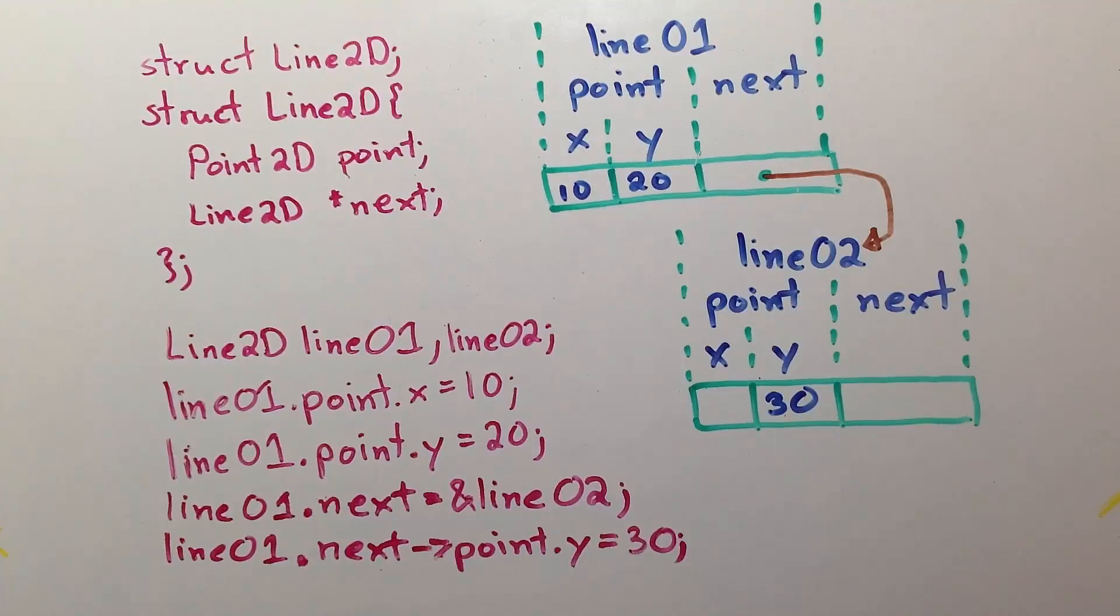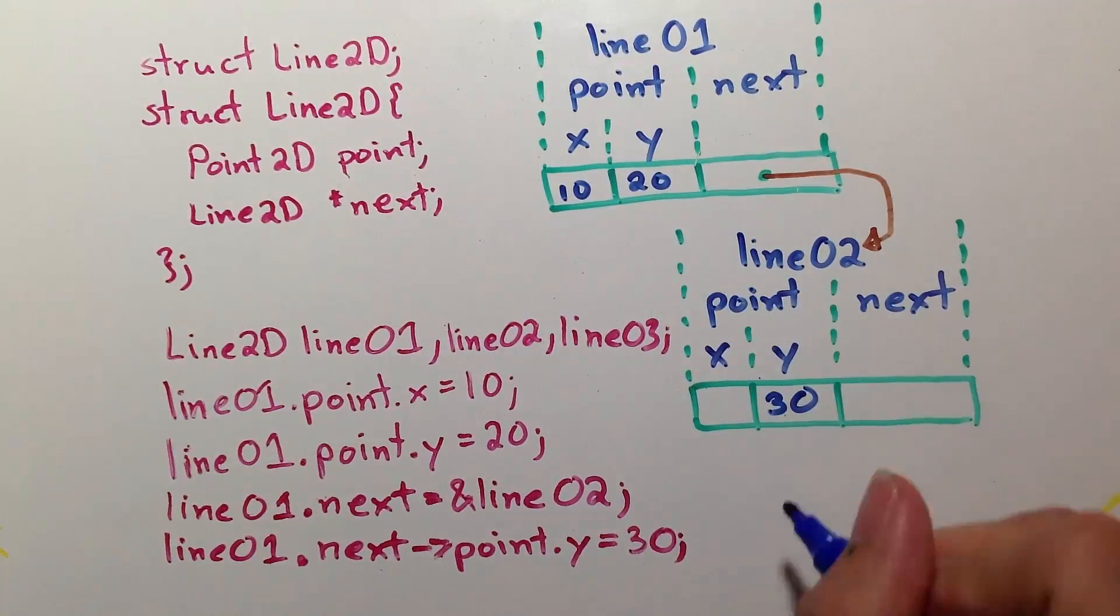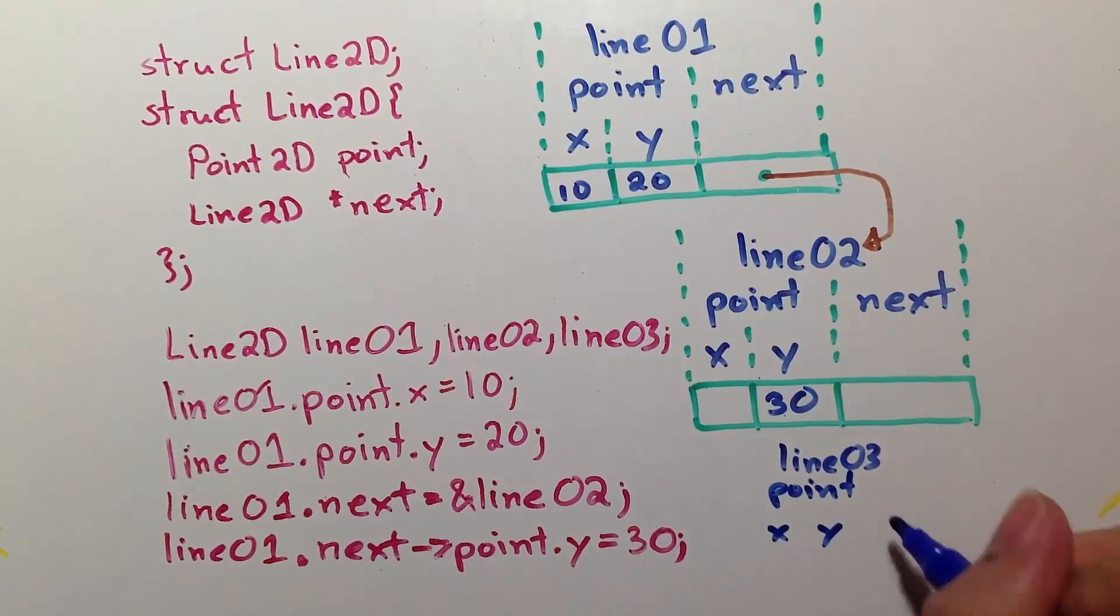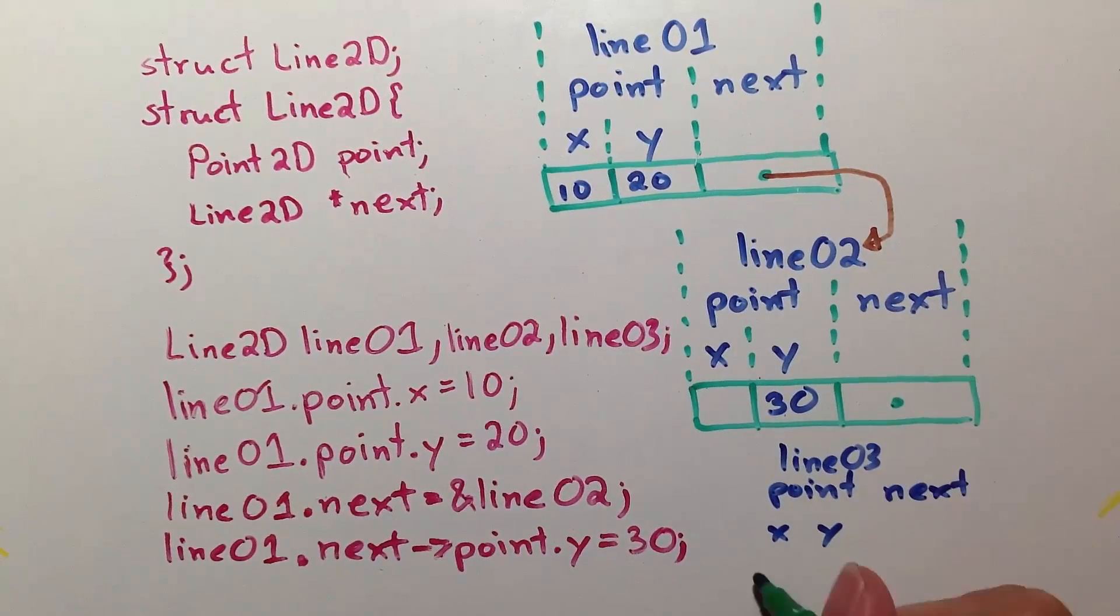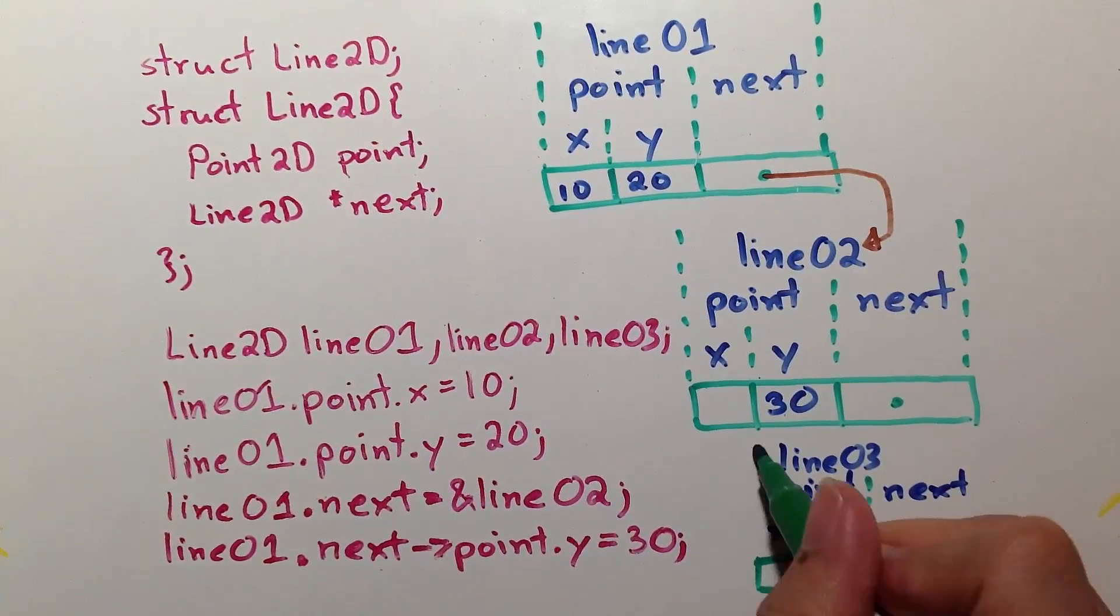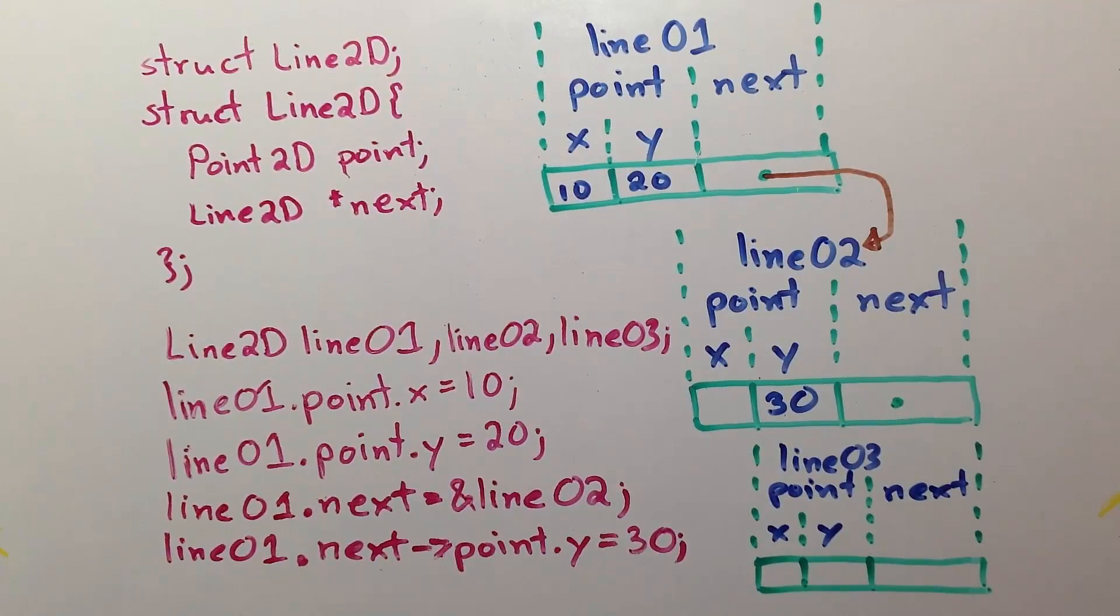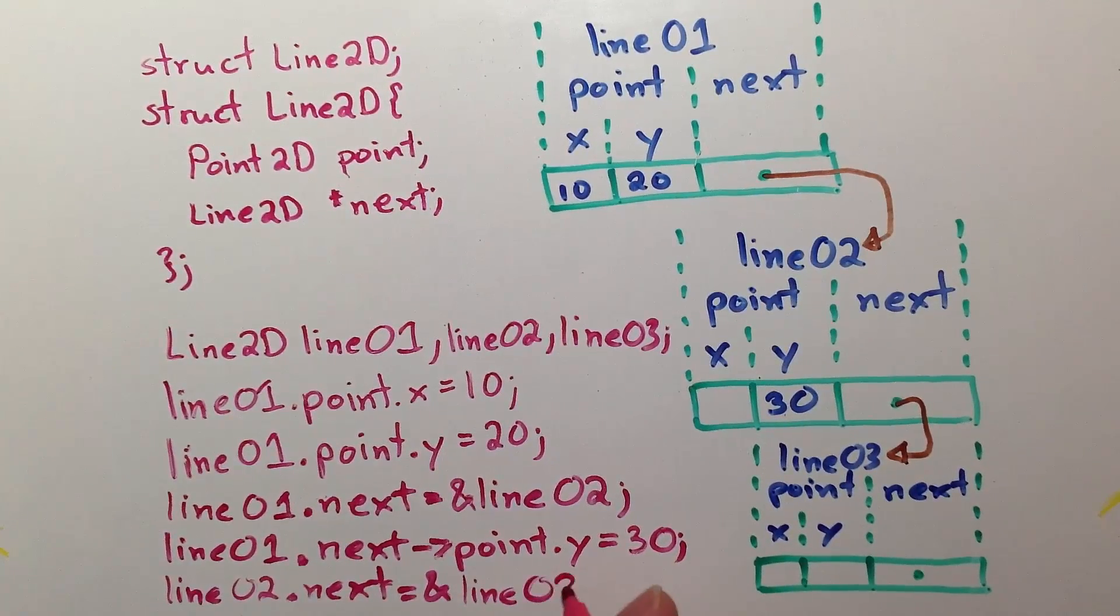Let's add another line2d called line03. In memory, it is located somewhere else, but it looks similar to line01 and line02. Let's connect line03 from line02.next. In code, that's line02.next gets the address of line03.